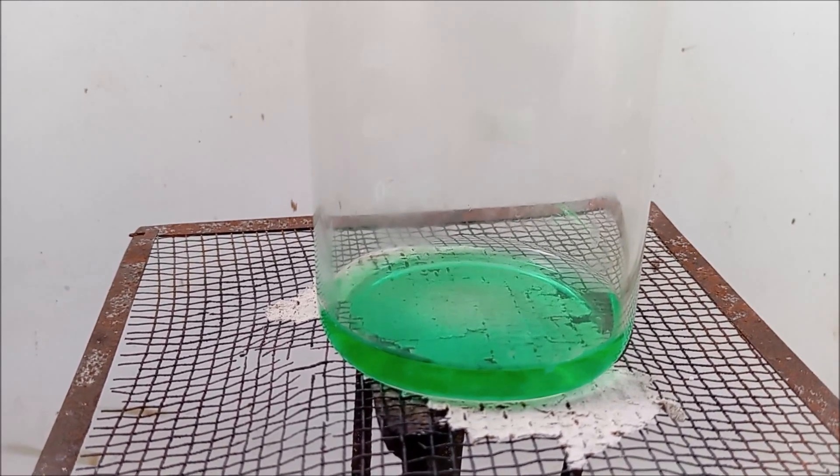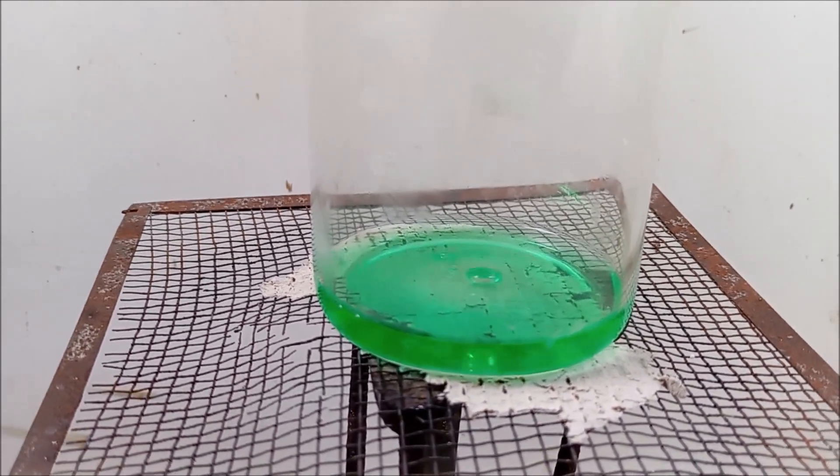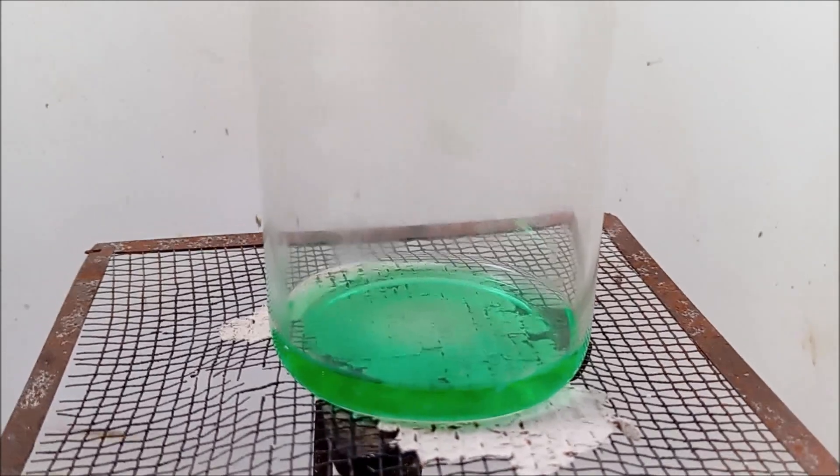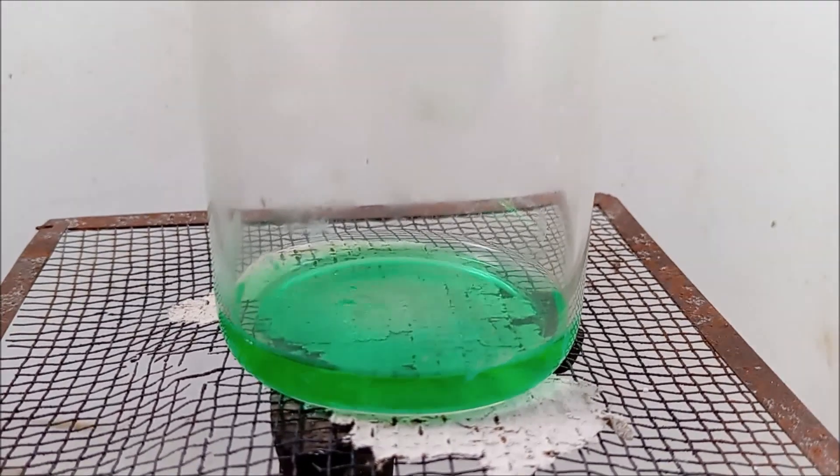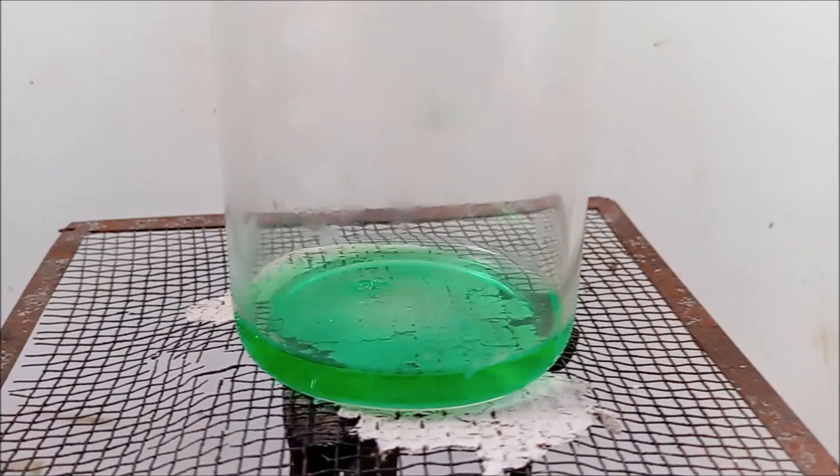If the metal doesn't dissolve for you completely, add another 5 milliliters of 1 molar sulfuric acid and try again. Now boil the solution for 2-3 minutes to expel hydrogen peroxide. Allow it to cool at room temperature.